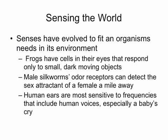You don't necessarily need to write these examples down, but our senses have kind of evolved to fit the needs of our environment. I have two Labrador Retrievers at home — they smell and hear much better than we humans do. Frogs have cells in their eyeballs that respond only to small, dark moving objects like bugs so they can find food. If you put a frog in a cage with dead flies that aren't moving, it's like they don't even see the food source. Male silkworms have odor receptors that can detect the scent of the female even a mile away. Human ears are most sensitive to frequencies that include things like voices, especially babies crying.